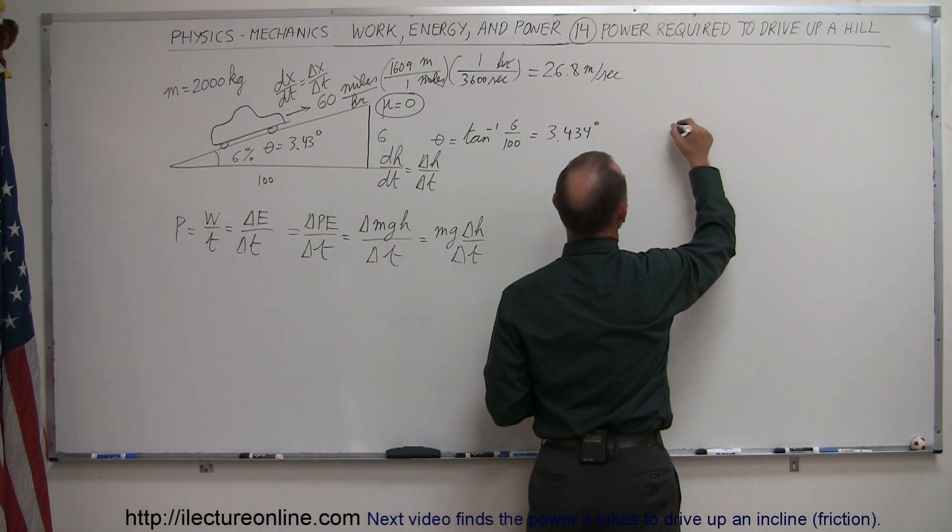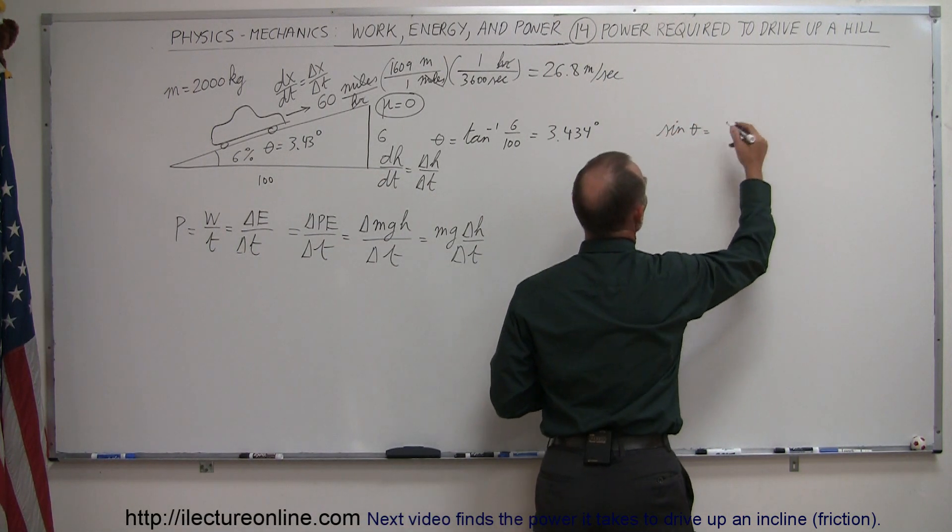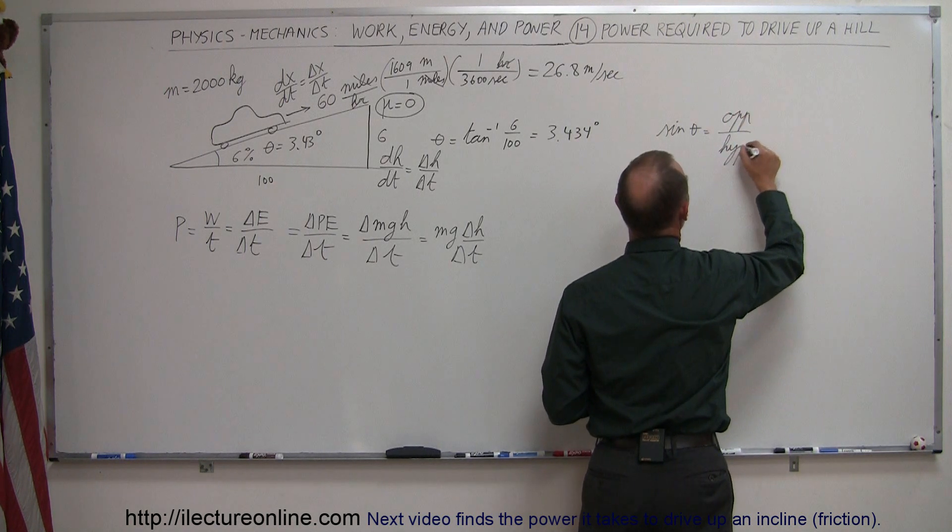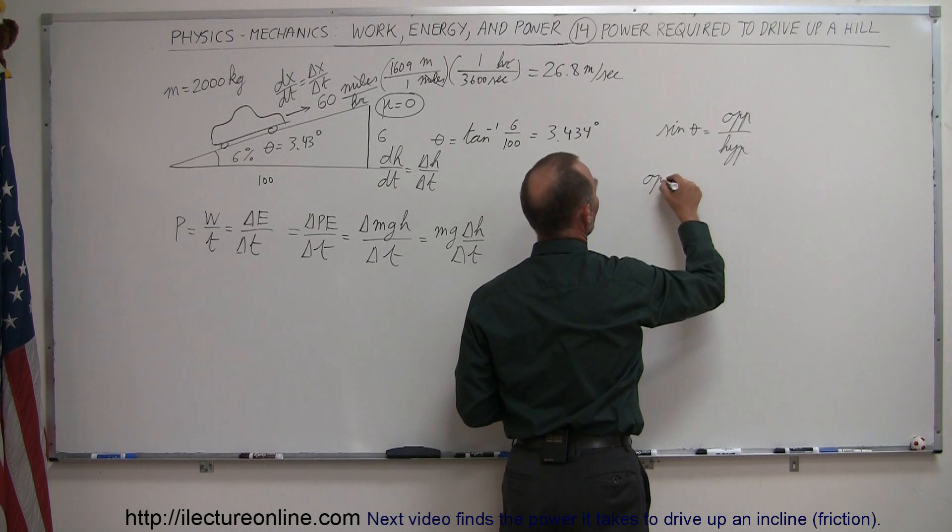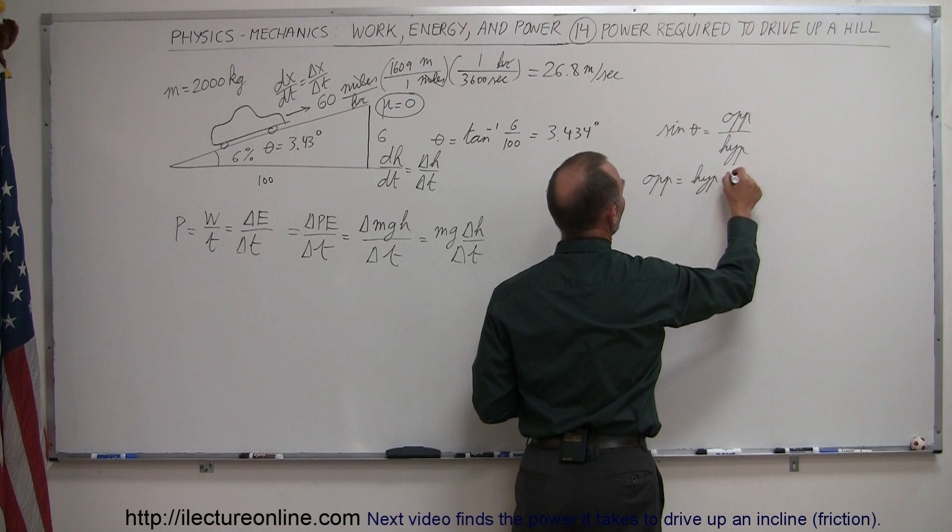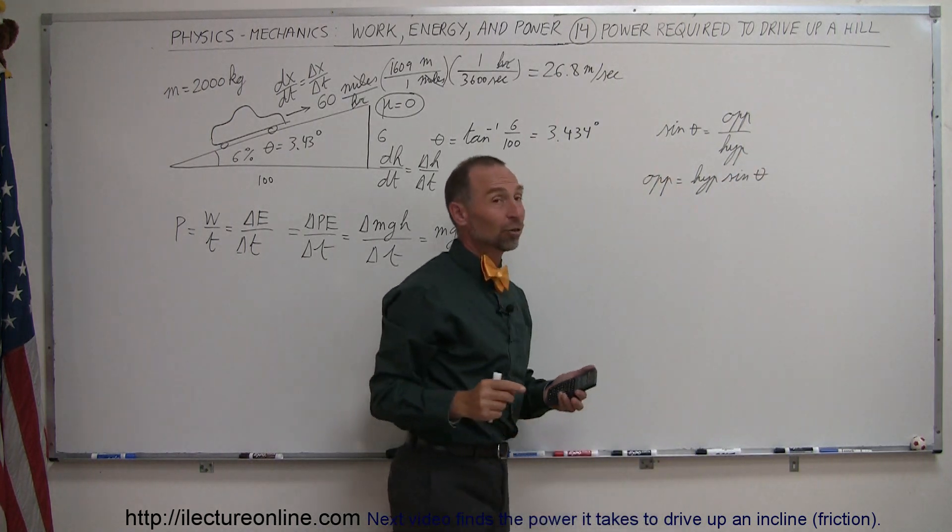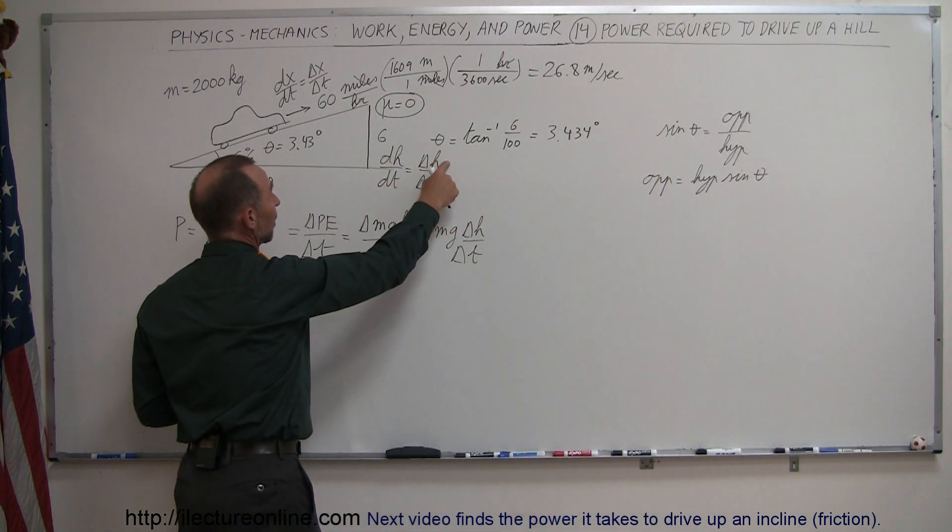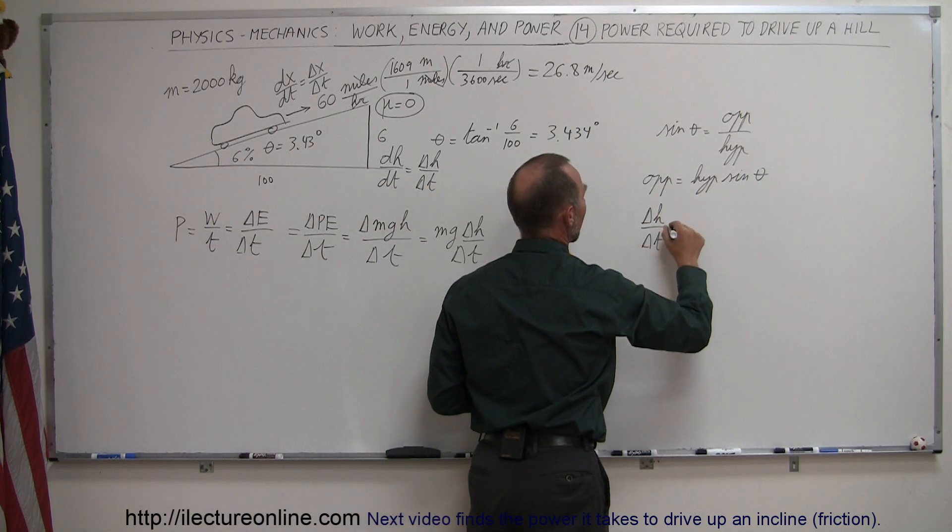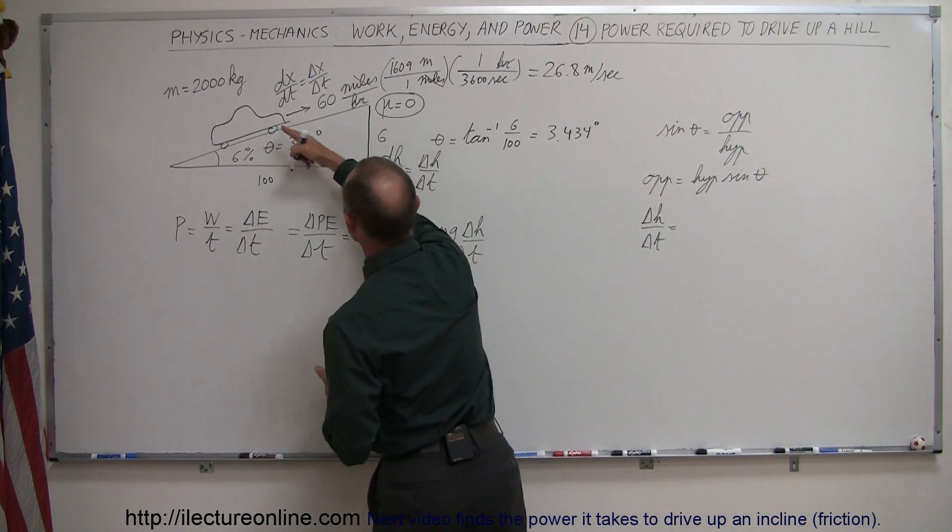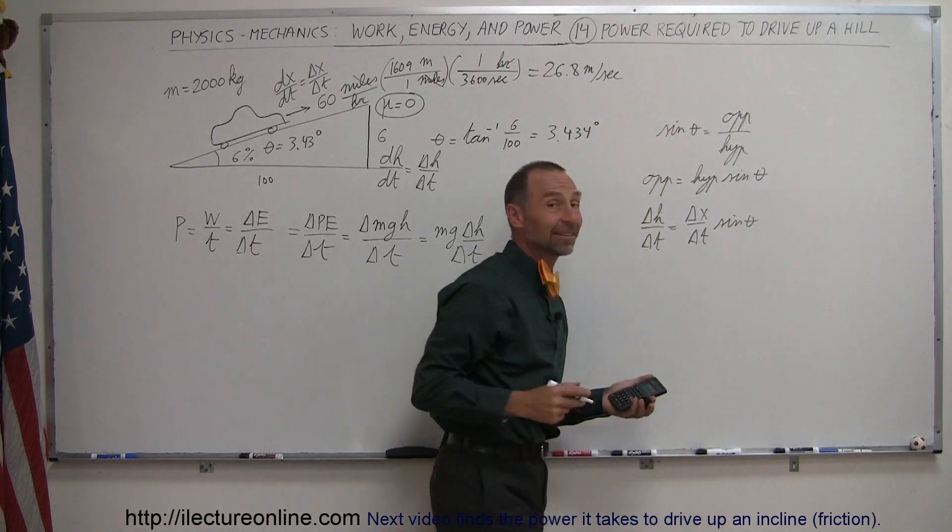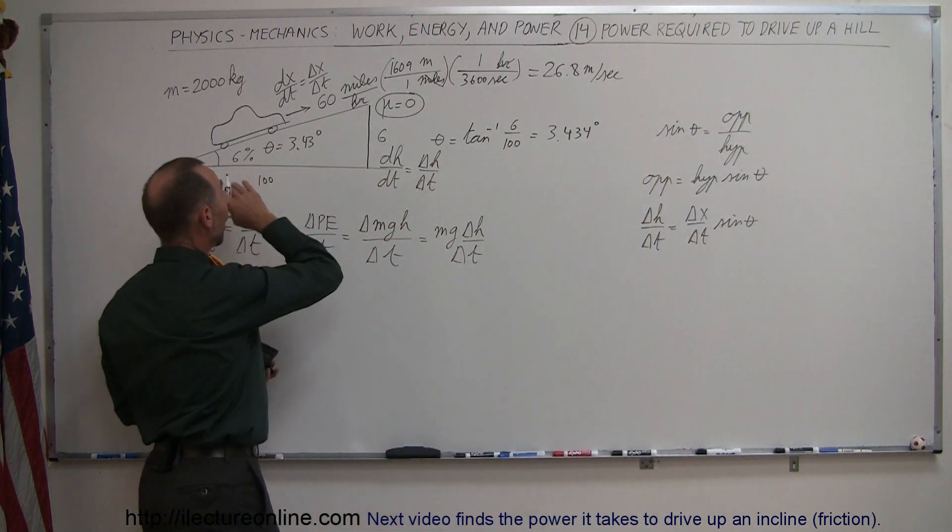So we can say that the sine of theta is equal to the ratio of the opposite side over the hypotenuse, which means if we solve this for the opposite side, the opposite side is equal to the hypotenuse times the sine of theta. And of course the opposite side is represented by delta H delta T, and the hypotenuse is defined by delta X delta T times the sine of theta. And of course the delta X delta T is simply the velocity of the car, which would be 26.8 meters per second.